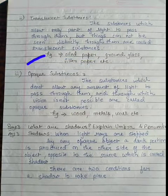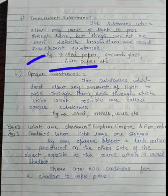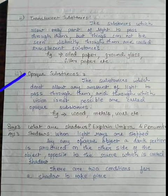Now students, examples of translucent substances are oiled paper, filter paper, etc. Third is opaque substance. The substances which don't allow any amount of light to pass through them. We call them as opaque substances.